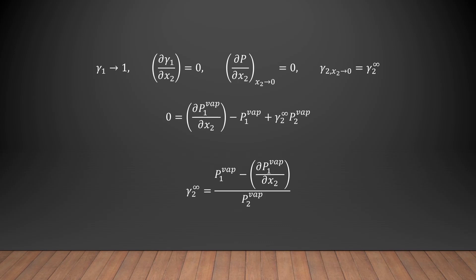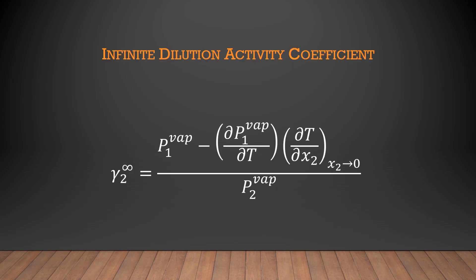From here, a chain rule expansion for temperature on the derivative of the solvent's vapor pressure with respect to solute mole fraction leads to the working equation for the infinitely dilute activity coefficient. Here, Antoine's equation is used to determine the vapor pressures and the derivative of the vapor pressure with respect to temperature. The derivative of temperature with respect to infinitely dilute solute is determined experimentally. This value represents the rate of change of the temperature inside the infinitely dilute regime. This expression will be used to calculate the infinitely dilute activity coefficient for each of the binary systems that are used in the experiment.